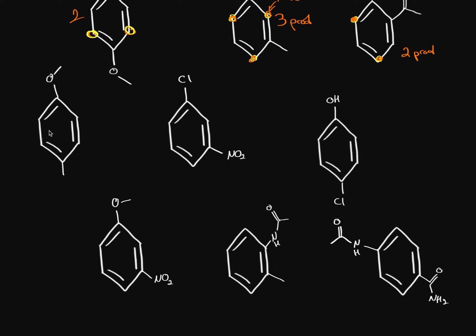In this molecule, the ether directs to ortho and para positions — these two positions. The methyl directs to these ortho and para positions. Since the ether is a stronger electron-donating group, the ether's positions are preferred. We have up to two positions where the nitrate can attach, but because of a line of symmetry down the middle, we only have up to one product.